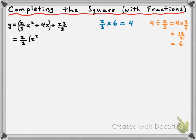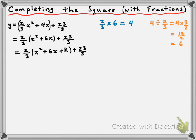Either way, this means that common factoring 2 thirds from the second term leaves us with plus 6x inside the brackets. You can double-check by expanding the 2 thirds back in. We still have our plus 23 over 3. In our next step, we want to put in some value k into the brackets to force the bracketed expression to be a perfect square trinomial. So we have 2 thirds times x squared plus 6x plus k, plus 23 over 3.